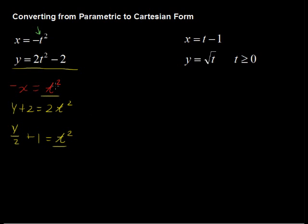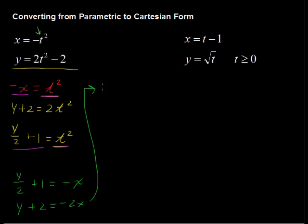Now we have these t squareds equal to each other, and so therefore we'll set negative x equal to y over 2 plus 1. So let's do that, and we get y over 2 plus 1 equals negative x. Let's multiply everything by 2 there, and you get y plus 2 equals negative 2x. Let's subtract 2 from each side, and you get y equals negative 2x minus 2. Now that is our equation in Cartesian form.